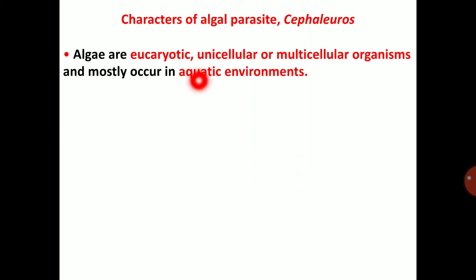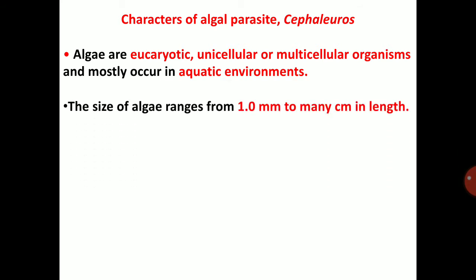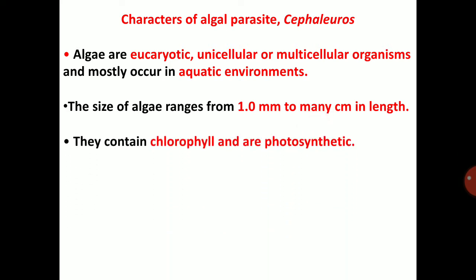Regarding the characters of algae parasites like Cephaleuros: algae are eukaryotic, unicellular or multicellular organisms and mostly occur in aquatic environments. The size of algae ranges from 1.1 millimetre to many centimetres in length. They contain chlorophyll and are photosynthetic in nature.